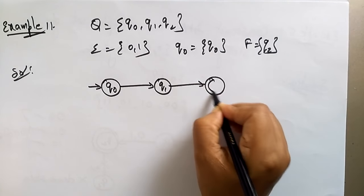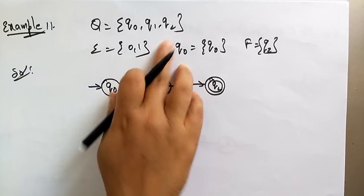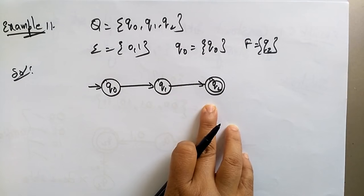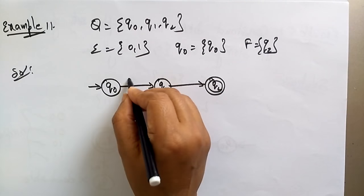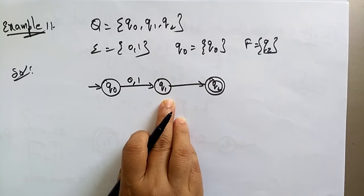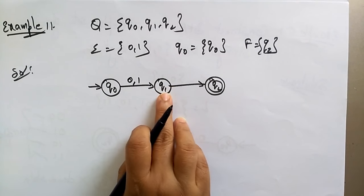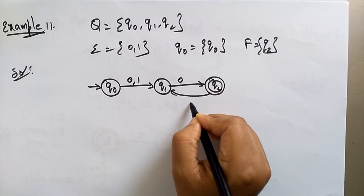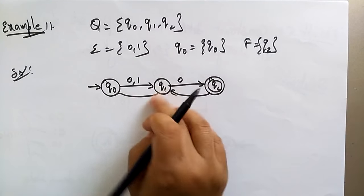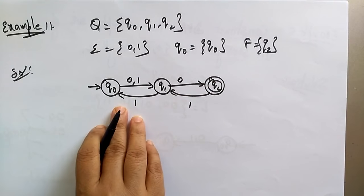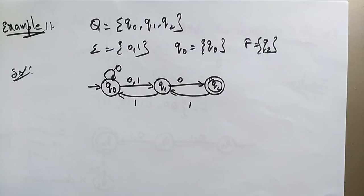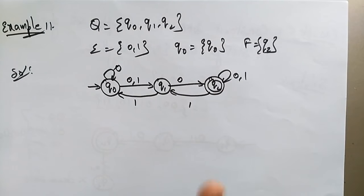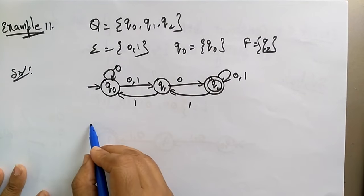They are given three states: q-naught, q1, and q2. Q-naught is the initial state and q2 is the final state. Q-naught on 0 goes to q1, and on 1 it also goes to q1. Q2 on 0 goes to q2, and on 1 it goes to q1. Q-naught on 0 has multiple paths. They have given the transition diagram like this, and I have to construct the table for it.